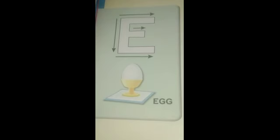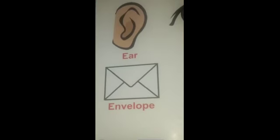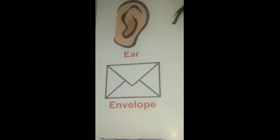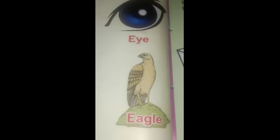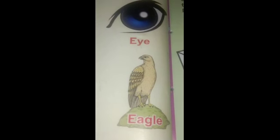This is your activity. Now again, we revise the alphabet: E for egg, E for ear, E for envelope, E for eye, E for eagle. Thank you and have a nice day. See you next week.